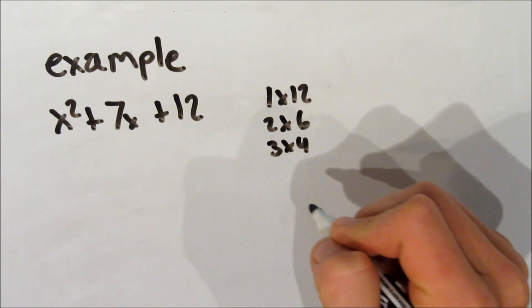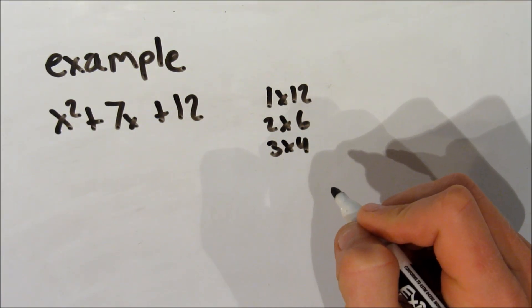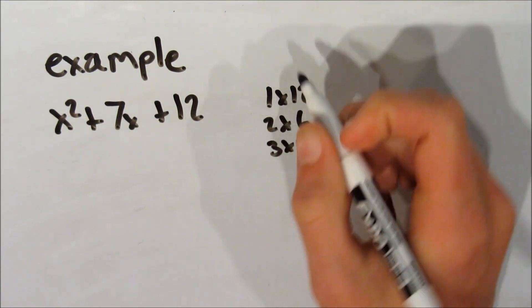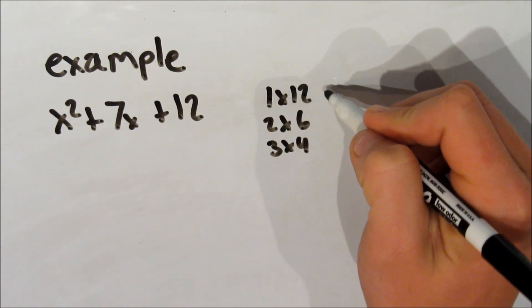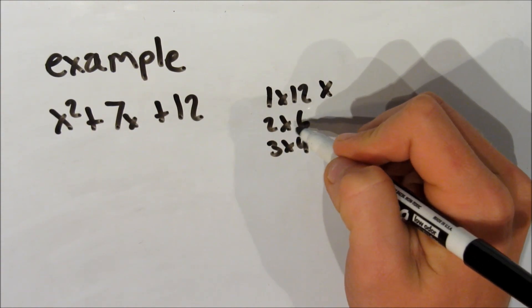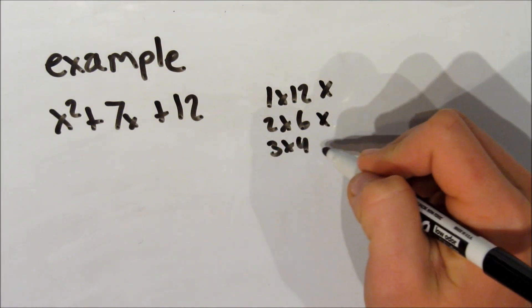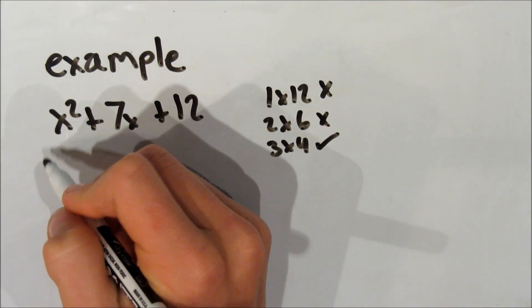So we start, say, 1 times 12, 2 times 6, 3 times 4. Then we look at what those add to. 1 plus 12 gives you 13, that's not 7. 2 plus 6, that gives you 8, that's not 7. 3 plus 4, that's 7.